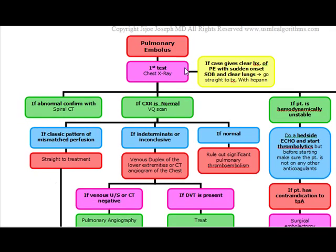Our first test on pulmonary embolus is always going to be the chest x-ray, but rarely will it be abnormal. If the case gives a clear-cut history of pulmonary embolus with a sudden onset of shortness of breath with clear lungs, go straight to treatment with heparin. If the patient has been immobile for a prolonged period of time, after delivery — one of these clear-cut PE situations with sudden onset of shortness of breath — after you do your chest x-ray, you're going to go straight to treatment with heparin.